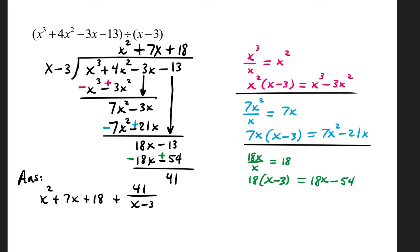In our second example, we have a dividend of x cubed plus 4x squared minus 3x minus 13, and a divisor of x minus 3. We're going to go through the same process, starting with pink. First term underneath divided by first term outside: x cubed over x is x squared. x squared goes up in your quotient. x squared times the divisor is x cubed minus 3x squared. That'll go underneath. Change your signs, and then vertically add like terms. The first column goes to 0. The second column makes 7x squared. Bring your next term down, and then start the process over. Switching to blue ink.